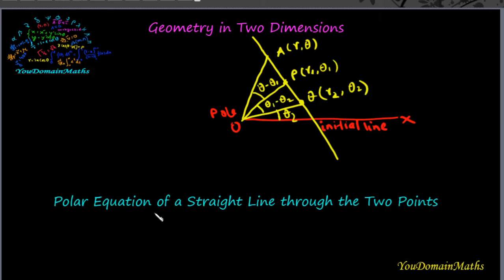Hello viewers, we will find the equation of a straight line through two given points. According to this figure, we will find the polar equation of a straight line joining two points. Let the given two points P and Q have polar coordinates (r₁, θ₁) and (r₂, θ₂), with reference to O (the pole) and OX (the initial line). A point R with coordinates (r, θ) lies on the line PQ.